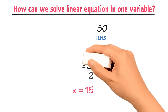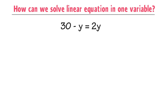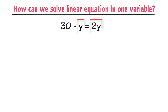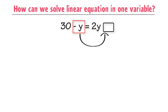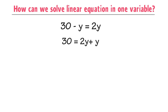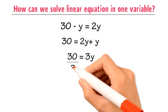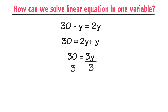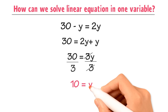Let me give you another example: 30 minus y is equal to 2y. There are three terms in this equation, but two terms contain the same variable y. Hence, we will arrange this equation so that y becomes one term. We will shift minus y from the left-hand side to the right-hand side. As a result, we get 30 is equal to 2y plus y, or 30 is equal to 3y. Now dividing both sides by 3, we get y is equal to 10.